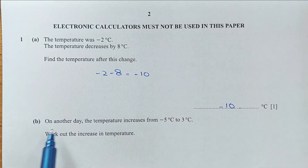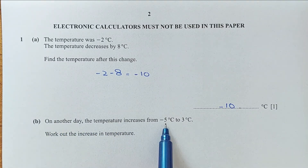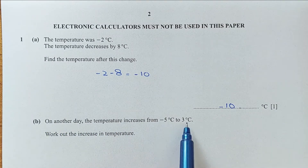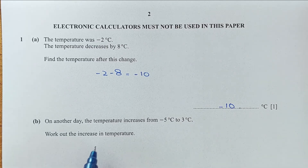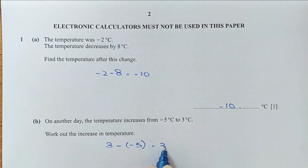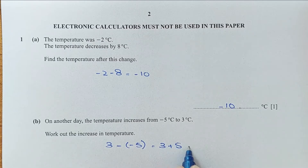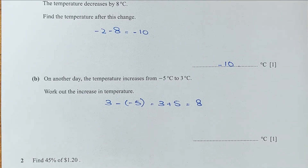Now for part B. On another day the temperature increased from minus 5 to 3 degrees. Work out the increase in temperature. How much has the temperature increased? 3 minus minus 5, so this is 3 plus 5, which equals 8. So the temperature increases 8 degrees.